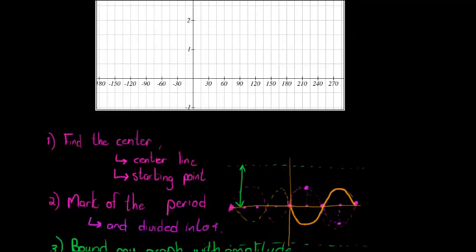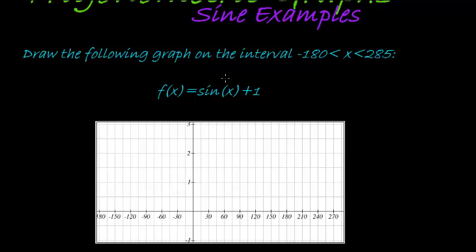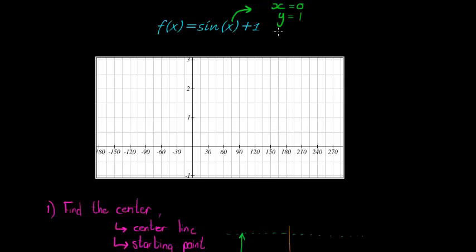In this example, if I want to first go and find my center line, I find my center line by making what is inside here equal to 0. So in other words, x is equal to 0, and if x is equal to 0, then I get that sine of 0 is 0 plus 1. So my center is x is equal to 0 and y is equal to 1. This is the coordinate for my center line, 0 for x and 1 for y. And then I can draw in very lightly, because it's not really part of my graph, my center line. So there's my center line that I can draw in.